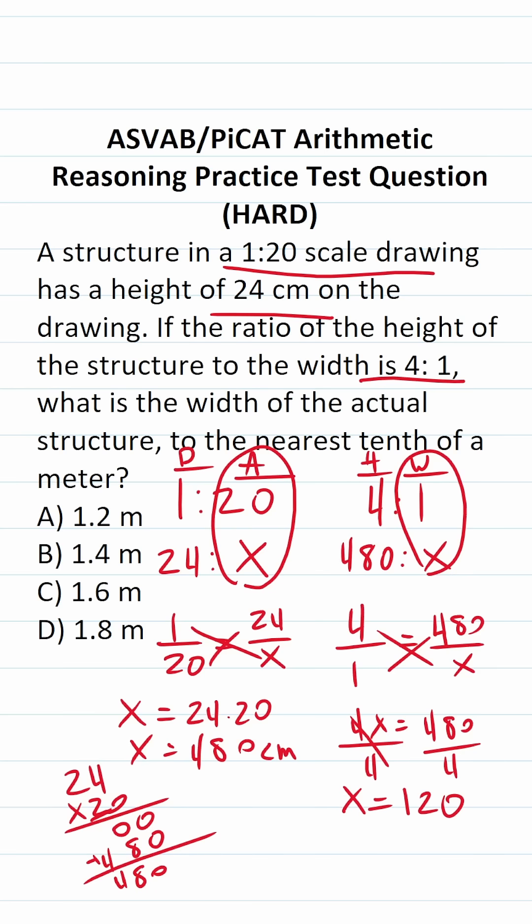So we know its actual width is 120 centimeters, but we have to give our answer to be in terms of meters. So we have to know that there are 100 centimeters in every one meter. So to convert 120 centimeters to meters, we're going to take our decimal and 120 centimeters and move it one, two times to the left. So 120 centimeters is going to be the same thing as 1.2 meters. So the answer to this one is A.